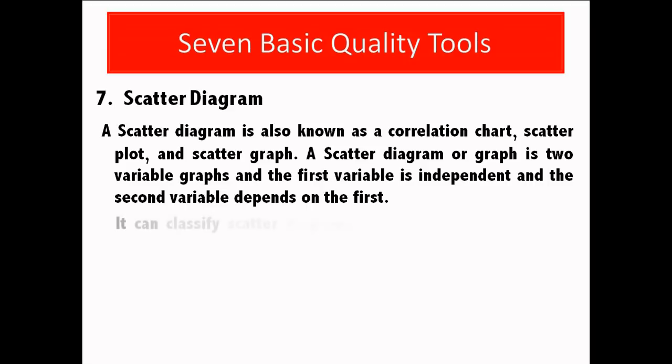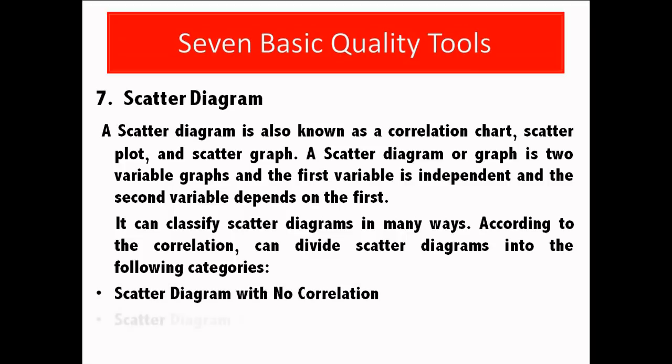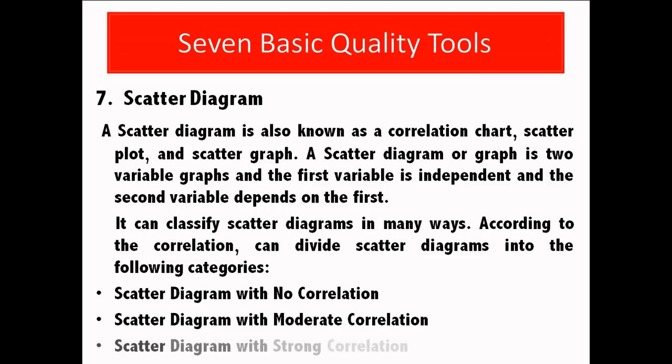It can classify scatter diagrams in many ways. According to the correlation, can divide scatter diagrams into the following categories. Scatter diagram with no correlation. Scatter diagram with moderate correlation. Scatter diagram with strong correlation.